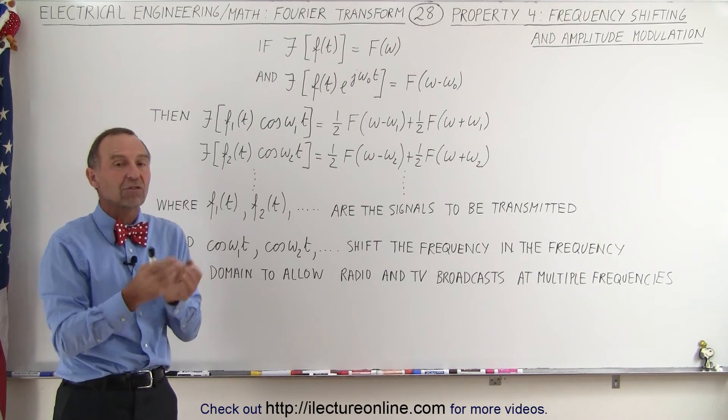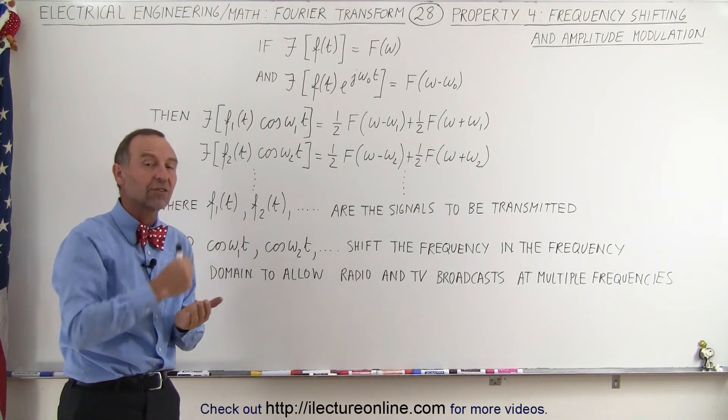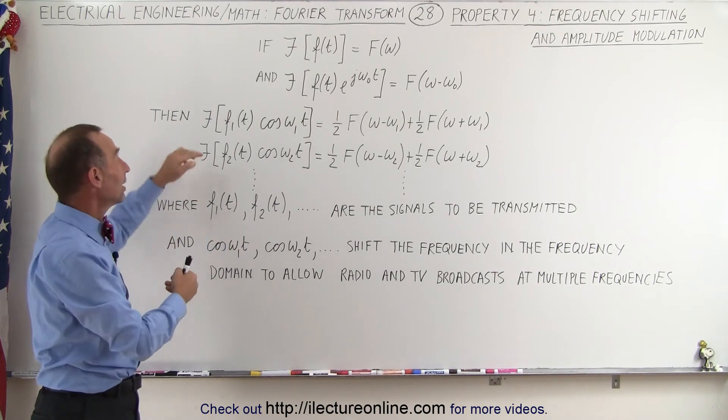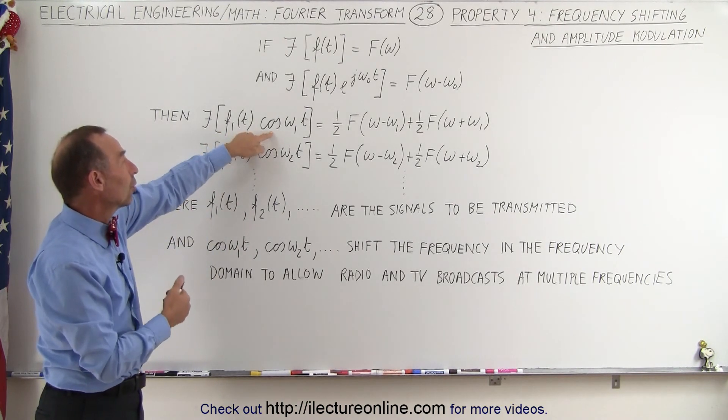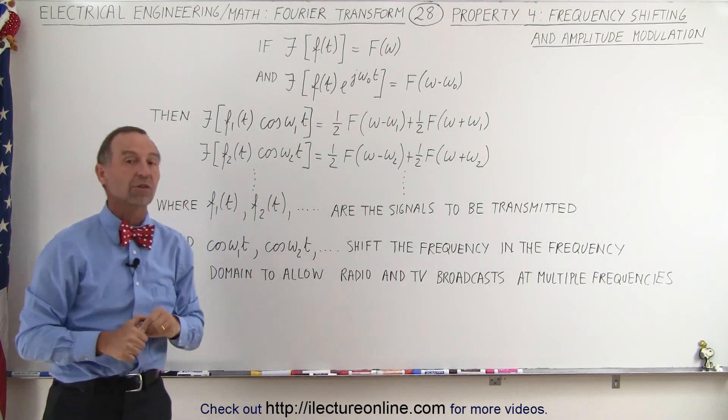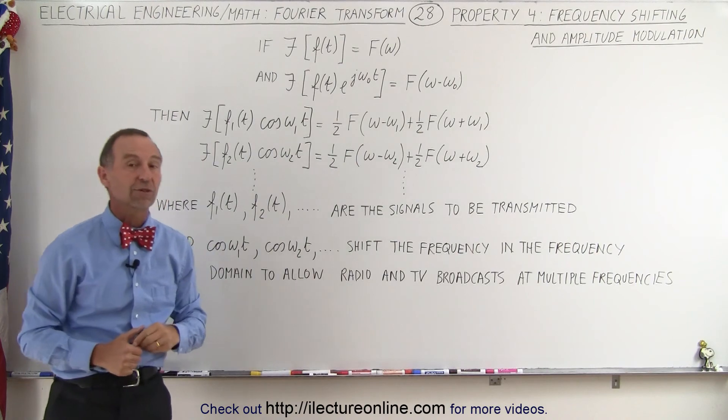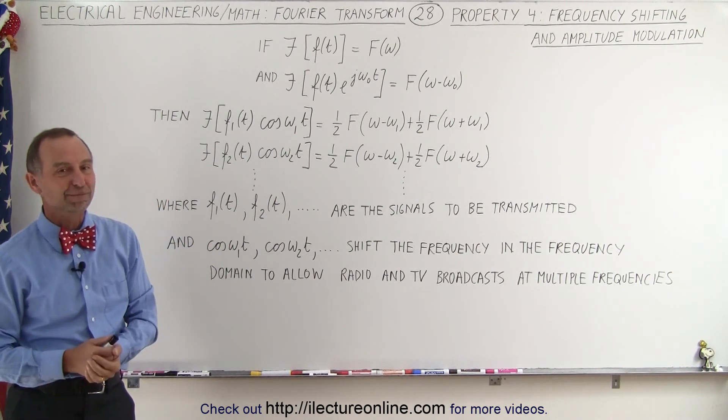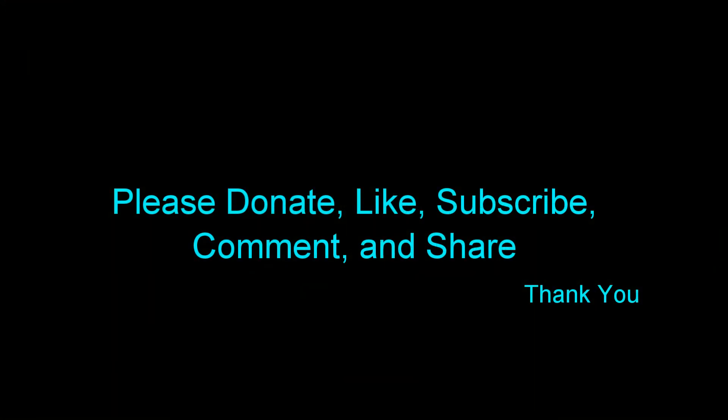So that's what we mean by amplitude modulation. It allows the shifting of the frequency at which we want to broadcast the signal, and we do that by simply taking the function in time domain and then multiply times a cosine before we do Fourier transform of the signal, turning it from a time domain function into a frequency function. And that's how it's done. Thank you.